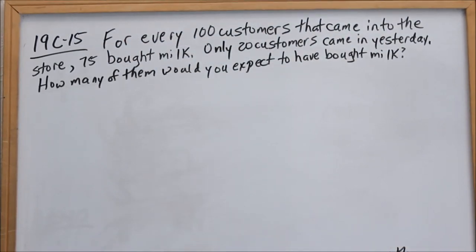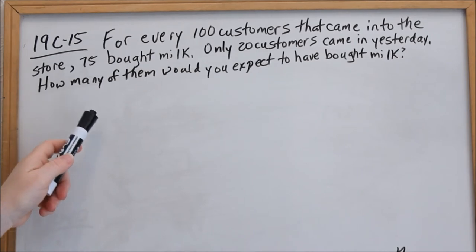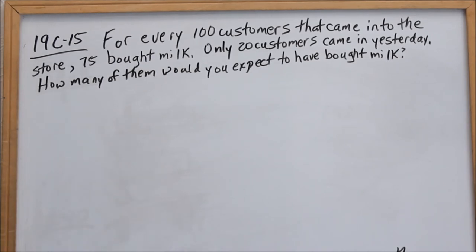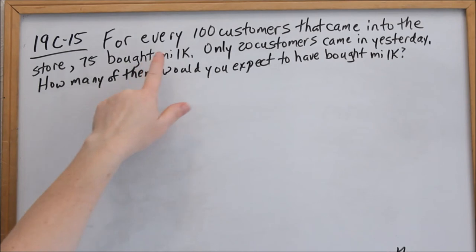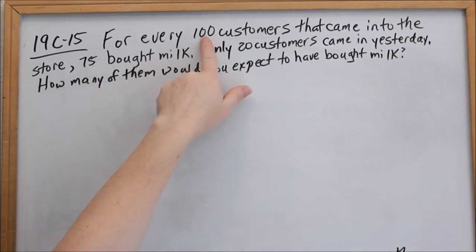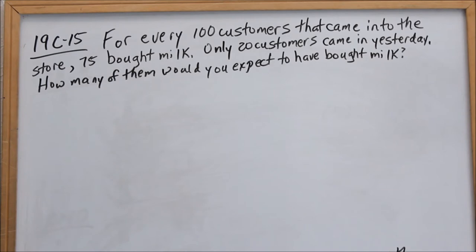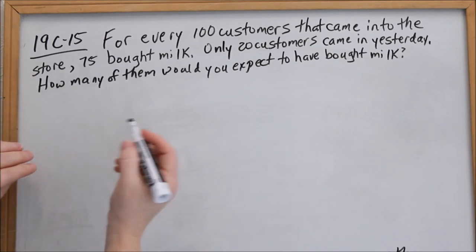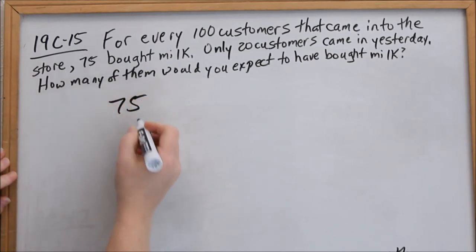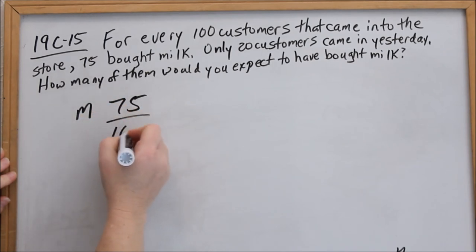Now we're looking at 19c15. Again, we're going to use ratios — fancy word for fraction — set one fraction equal to another and cross multiply. For every 100 customers that came into the store, 75 bought milk. Let's make a ratio out of that first sentence: 100 represents total customers, so 75 bought milk out of 100 total.